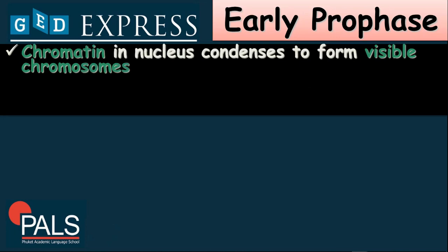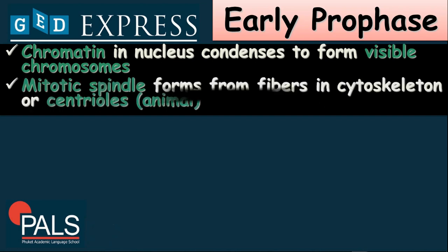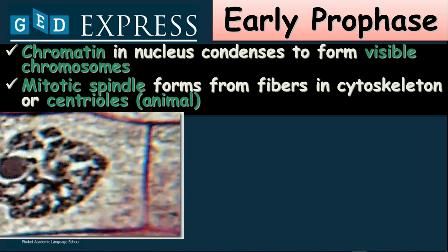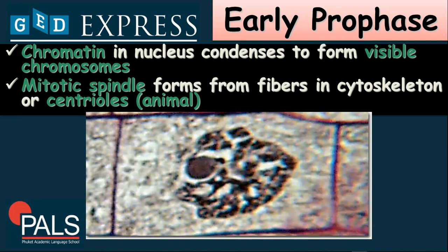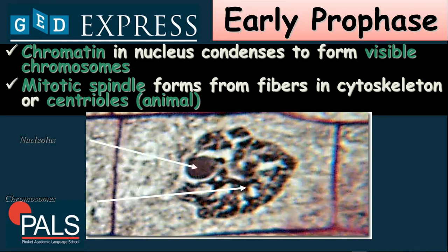Now let's have the first stage, which is prophase. Prophase is divided into two stages: early prophase and late prophase. During early prophase, the chromatin in your nucleus condenses to form visible chromosomes. The chromatin is the protein which makes up a chromosome. A mitotic spindle forms from fibers inside the skeleton on plant cells, or centrioles on animal cells. We have here this example showing the mitotic spindle fiber being formed during early prophase, along with the chromosomes being produced and the nucleus.